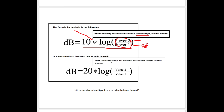If we're calculating voltage or acoustic pressure changes, we have to use the formula with 20 instead of 10 — the only difference. That's because we've got to convert into units of power by squaring it, and we can bring that square down and multiply that 10 by 2 to make it 20.